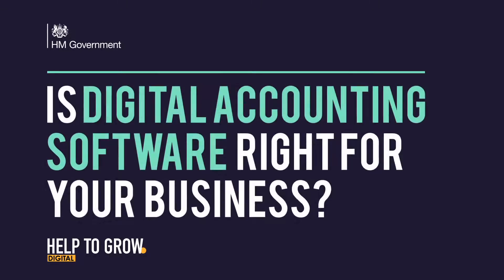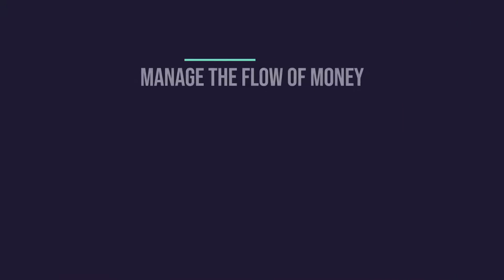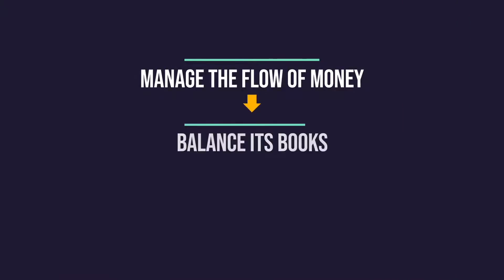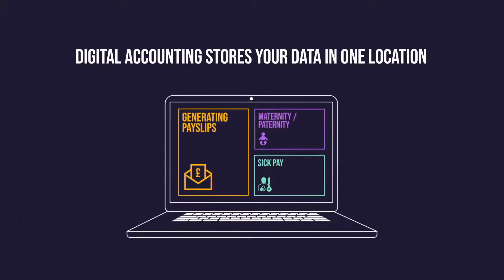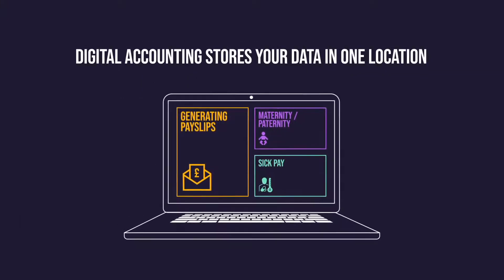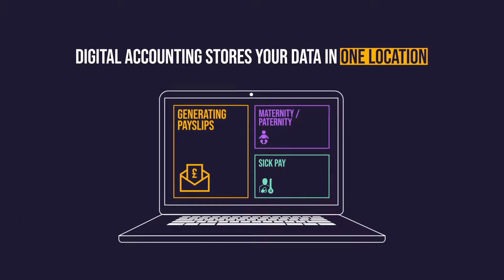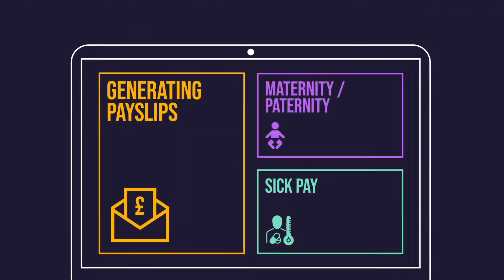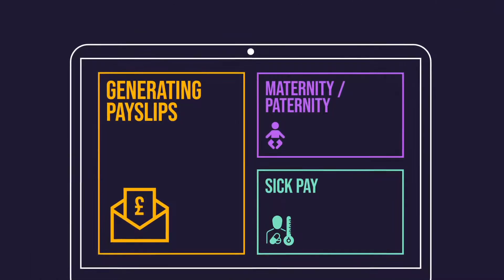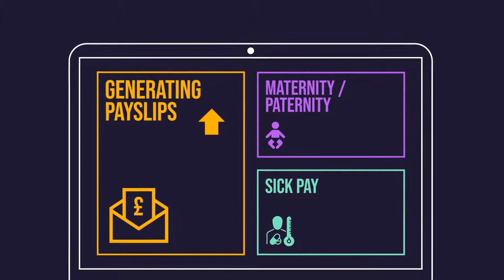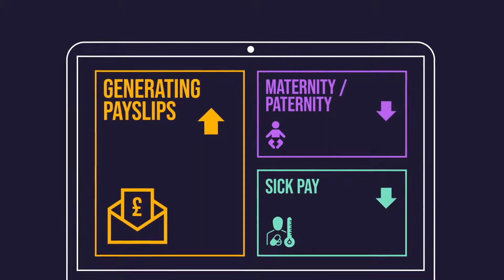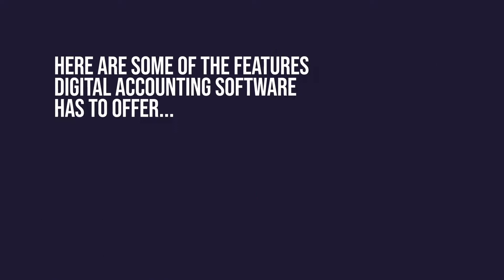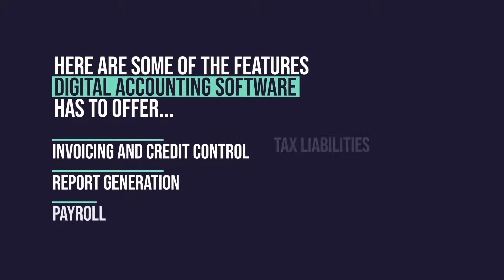Is digital accounting software right for your business? Every business needs to manage the flow of money, balance its books and ensure the right tax is paid. Digital accounting software can help you stay on top of your finances by storing your data in one location. It also automates many of your manual tasks, such as generating payslips and taking care of deductions like maternity, paternity and sick pay. Here are some of the features that digital accounting software has to offer.